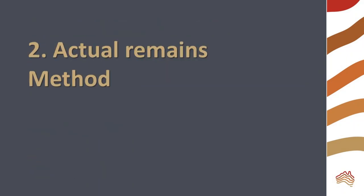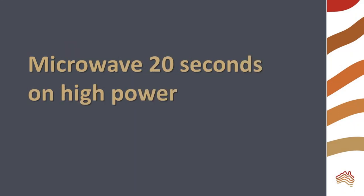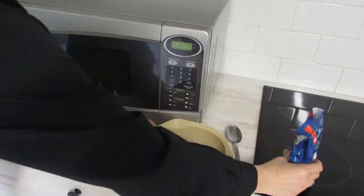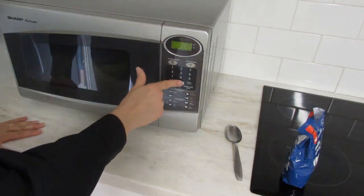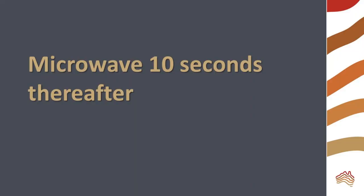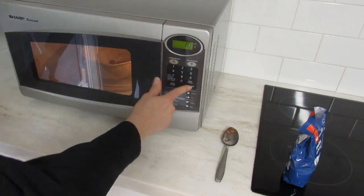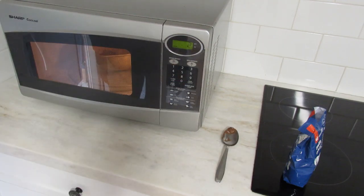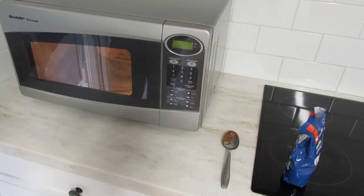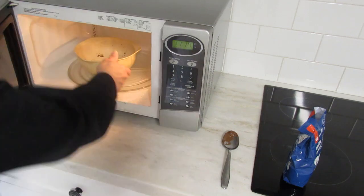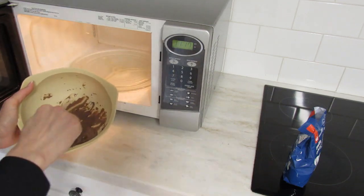Melting the chocolate in the microwave is easy, but you must do it slowly and stir frequently. Microwave the chocolate on high power for 20 seconds at first. After the first time, you will just microwave for 10 seconds at a time, stirring every 10 seconds. You want the chocolate to just melt but not be too hot.